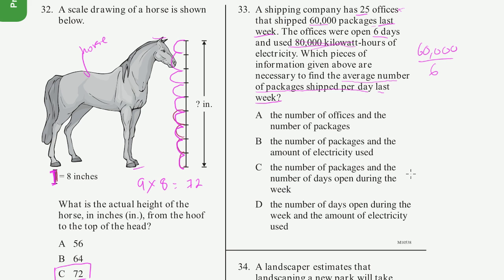They're asking us what information do we need. We need the total number of packages shipped last week, and we need the number of days that the office was open. So what choices are that? The number of offices? No, we don't need the number of offices, because they didn't ask us per office. The number of packages and the amount of electricity. No, this has nothing to do with electricity. The number of packages and the number of days opened during the week. Yeah, that's what we use.